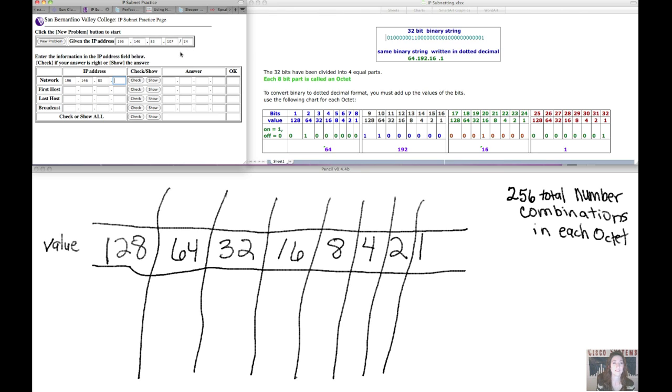The slash 24 tells us that the first 24 bits of the IP address belong to the network. And it's telling us the last octet belongs to the host. So we have network, network, network, host. That's what we're looking at in this example.